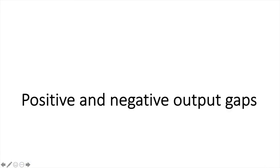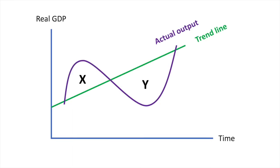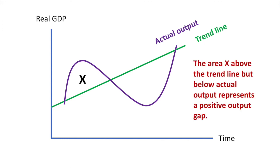Having developed an understanding of the stages of the trade cycle, we now come to the idea of positive and negative output gaps. Following this video, we'll go into further detail about each, but for now let's look at them in the context of the trade cycle. Output gaps exist where actual output is above or below potential output. Area X, above the trend line but below actual output, represents a positive output gap. Area Y, below the trend line but above actual output, represents a negative output gap.